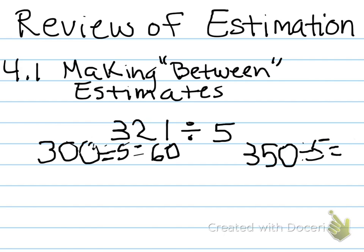And 35 divided by 5 is 7, carry a 0, so it would be 70. So it would be between 60 and 70. Nice job, Mathlete.